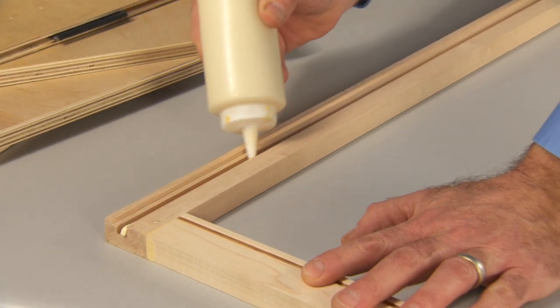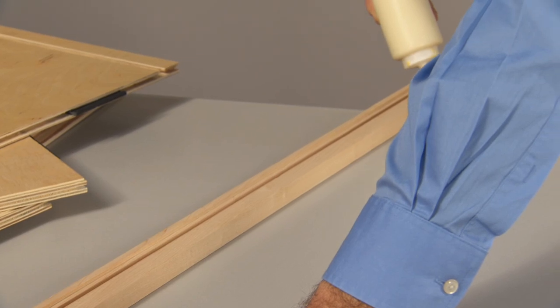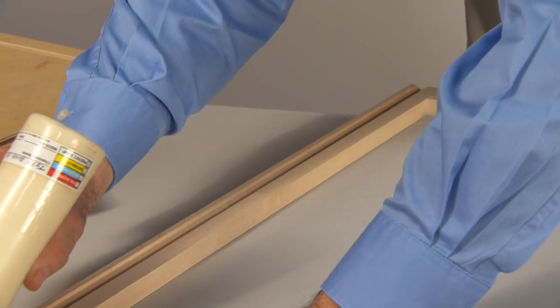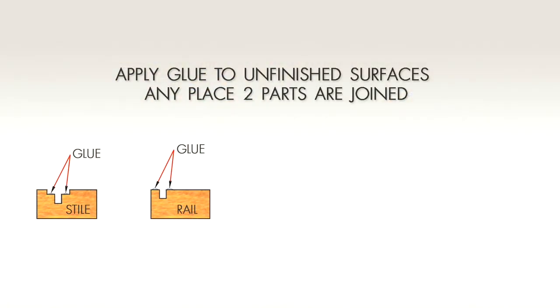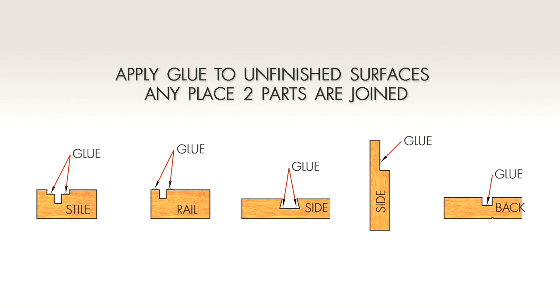Glue must be applied to unfinished surfaces any place two parts are joined. Front frame styles and rails, female dovetails, the back rabbets of sides, and in grooves of backs.